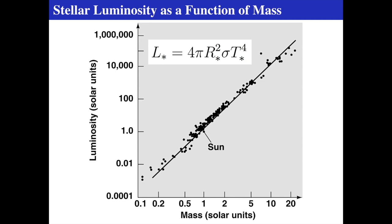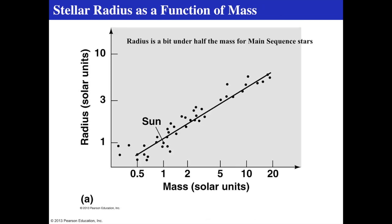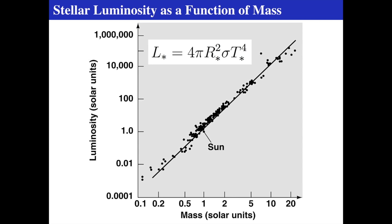Even though the radius and mass vary roughly the same, the luminosity and mass do not. Really massive stars are extraordinarily luminous compared to the Sun, and really small mass stars are extraordinarily under-luminous. The radius of a main sequence star varies almost the same as the mass — roughly between about 10% and 20 times — but the luminosity tells a very different story.